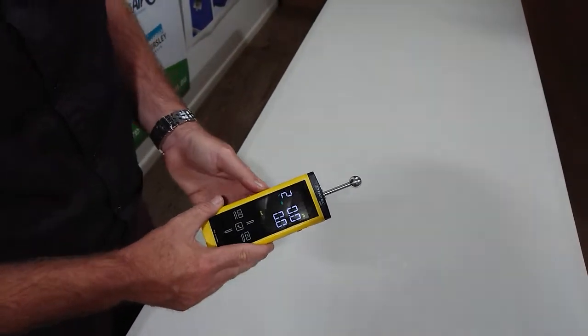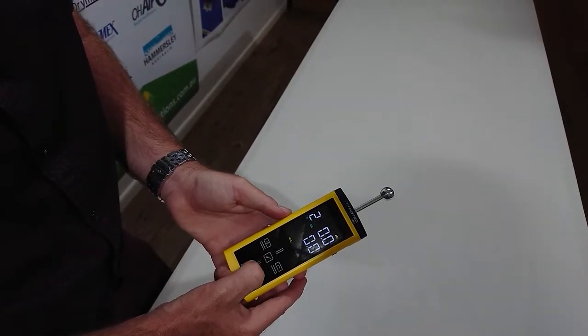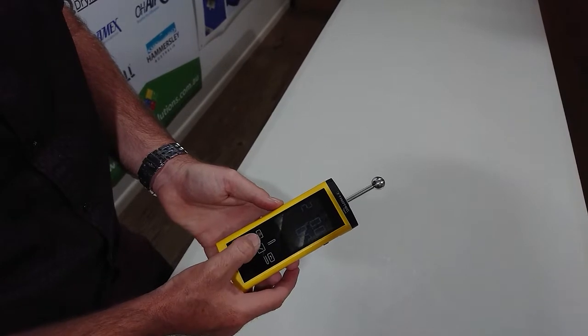Now let me show you a little bit about the menu side of things. We've got the left and right arrows, up and down, we've got the tick button, the back button, and we've got the menu button.